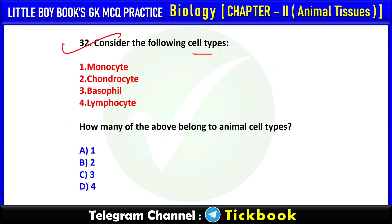Q32. Consider the following cell types: monocytes, chondrocytes, basophil, lymphocytes. How many of the above belong to animal cell types? Option number D: 4.